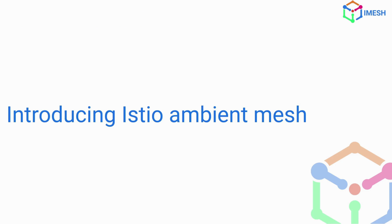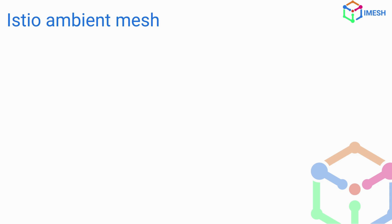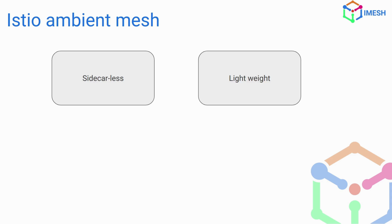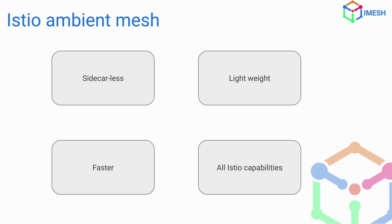Now comes Istio Ambient Mesh, which is the newer and much faster approach to Istio. It is sidecar-less — you do not have the pain of injecting Envoy proxies to each and every pod. It is pretty lightweight, faster due to two special components we'll discuss, and it comes with all the Istio capabilities seen in the sidecar-based mesh.